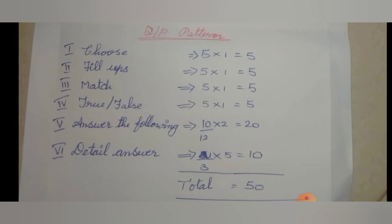You also have to answer short answers. Very short answers and short answers are asked together — 12 questions will be asked, from which you can select any 10. 10 twos are 20 marks. For detail answers, 3 questions will be given and you can select any 2. Each carries 5 marks, so 10 marks. Your total mark is 50.